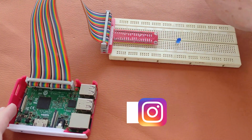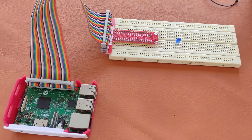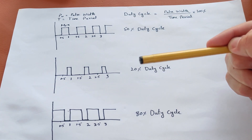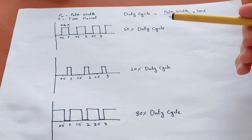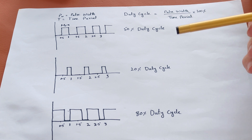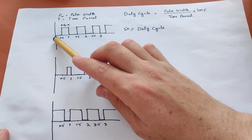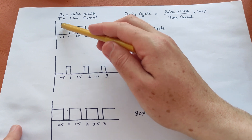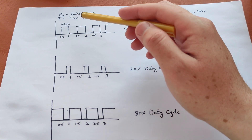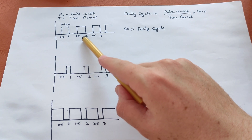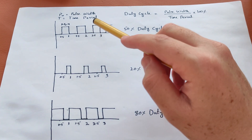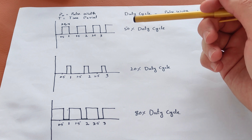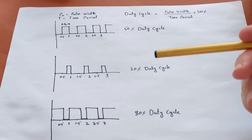First we will learn the concept of pulse width modulation. Here we have three types of signals. Each signal has a time period of one second, meaning it repeats itself every one second. This first signal is off for 0.5 seconds and then on from 0.5 to one second, giving a value of five volts. After one second it is again off, and after 1.5 seconds it is again on — so it is a periodic signal giving five volts for 0.5 seconds.